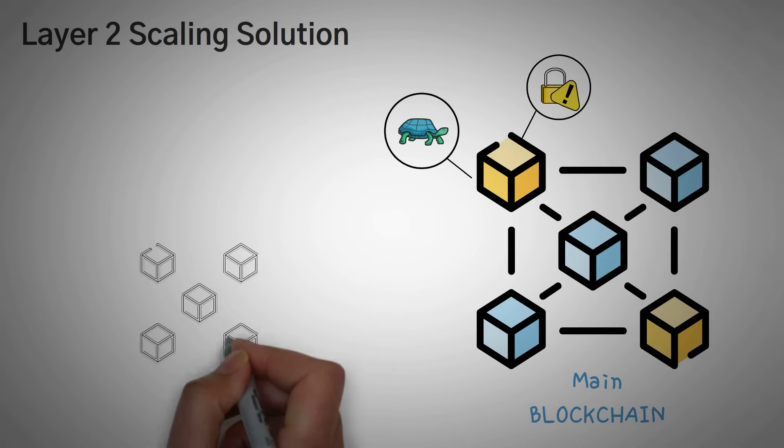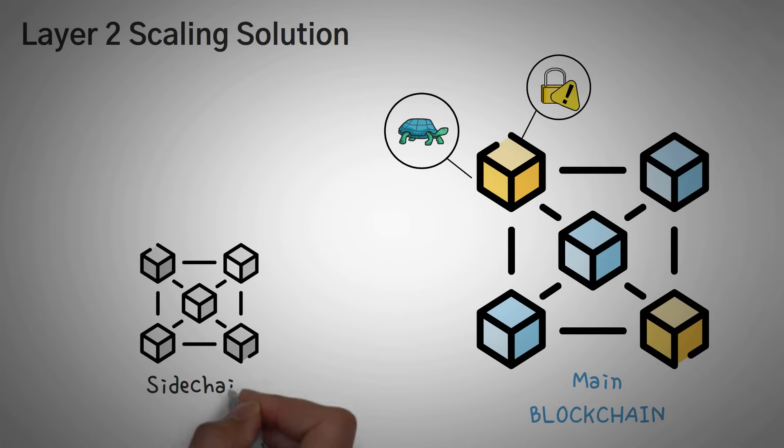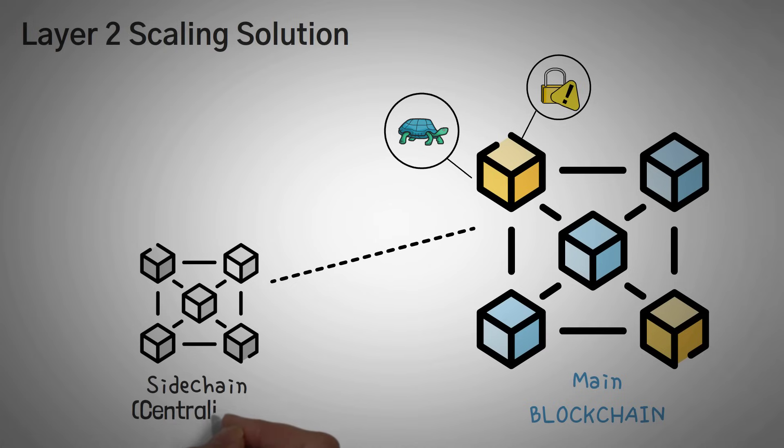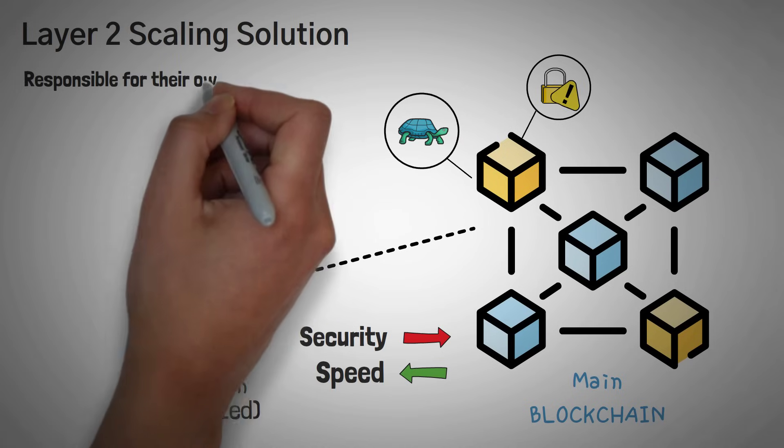Now, sidechains attempt to take some of the work that a main blockchain needs to do and do it for them. Well, how do they do this? Most sidechains are a little more centralized than the main chain, but this is okay because we will trade off security for speed, just we don't want to do it on the main chain. This may be our first important point of sidechains. They are responsible for their own security.